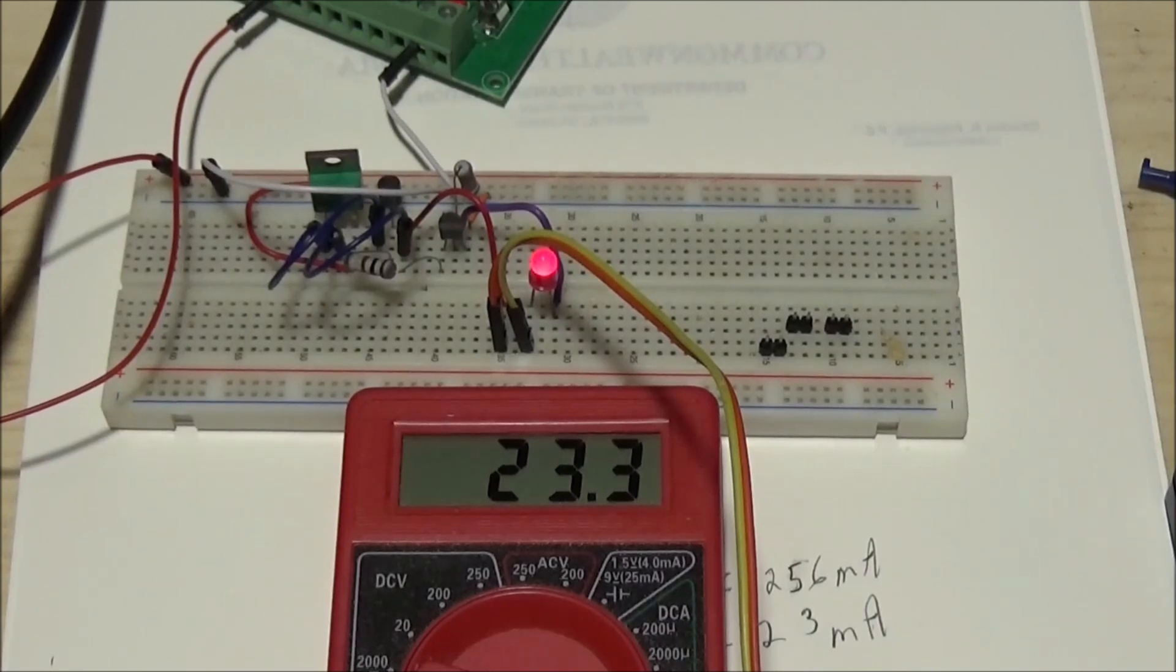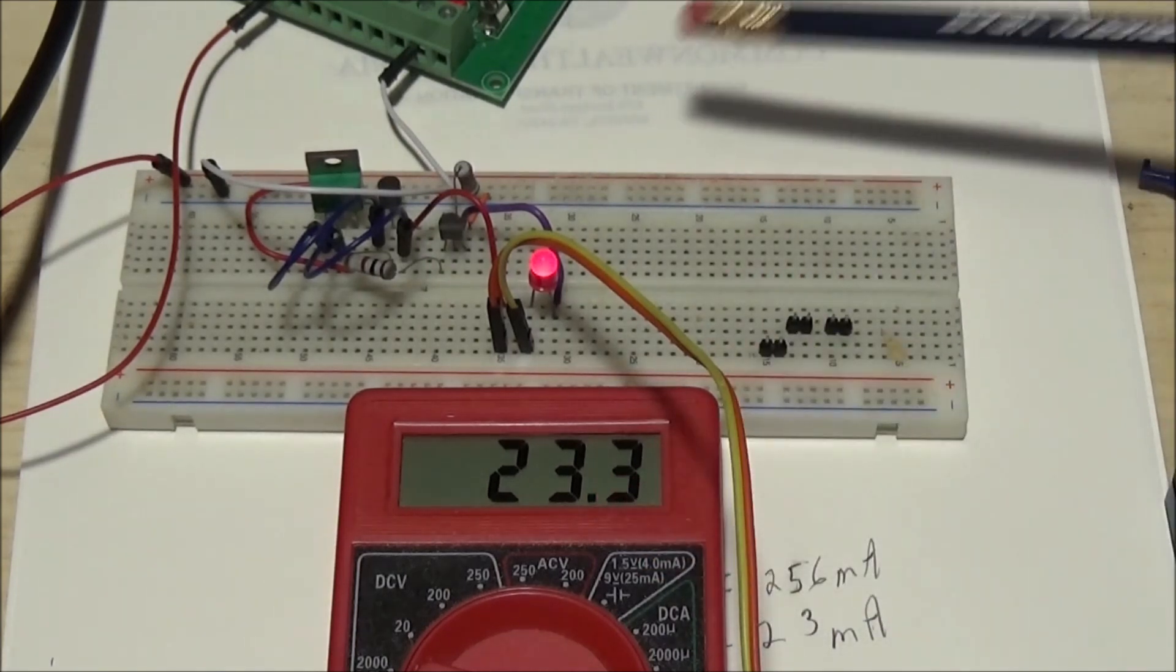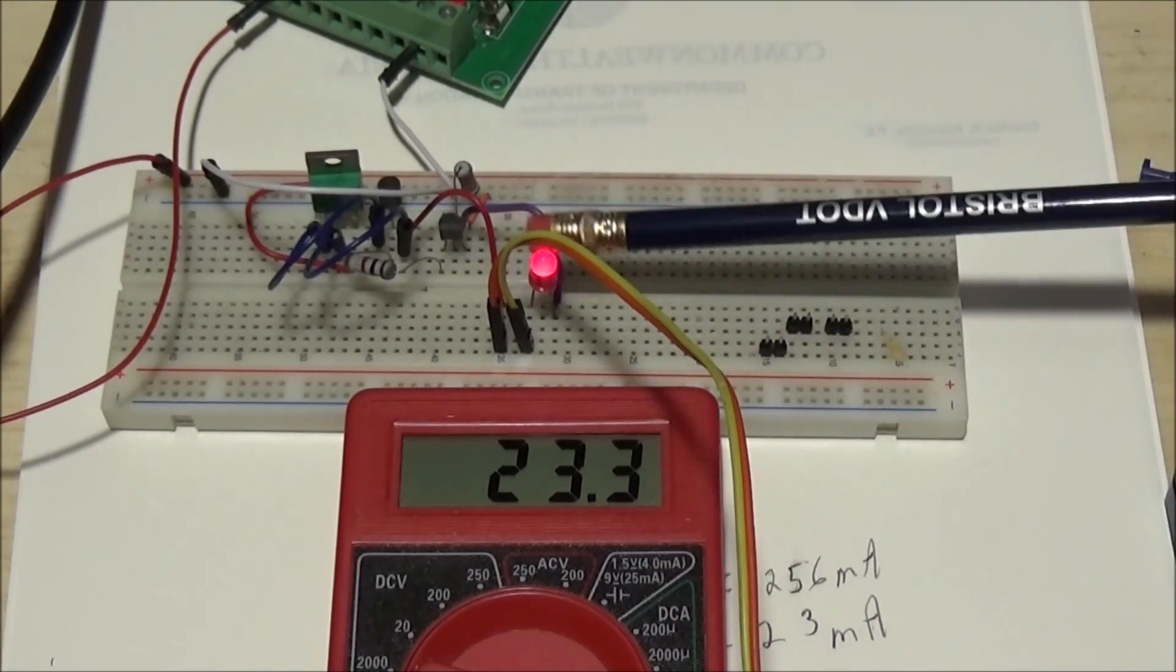You're viewing an LM334-based constant current source. I'm measuring the current here at 23.3 milliamps, and that's the current that's flowing through this LED.